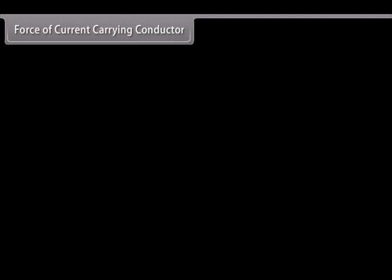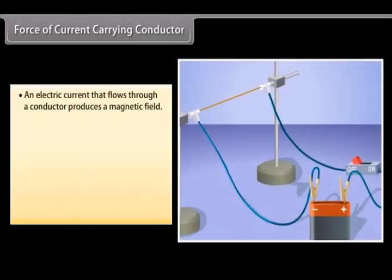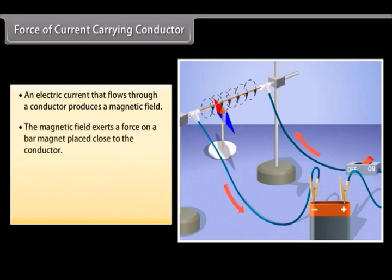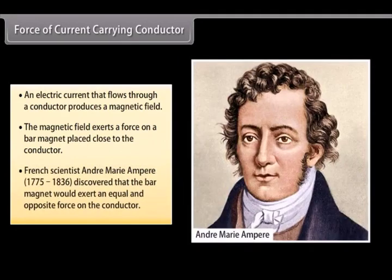We have seen that an electric current that flows through a conductor produces a magnetic field. The magnetic field so produced exerts a force on a bar magnet placed close to the conductor. French scientist André-Marie Ampere, 1775-1836, discovered that the bar magnet would also exert an equal and opposite force on the conductor.